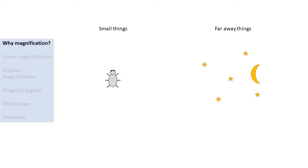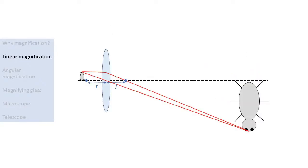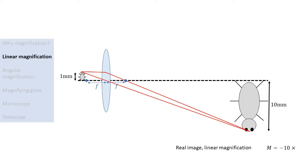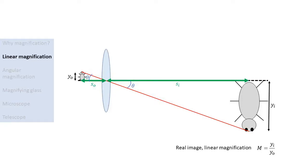The purpose of many optical instruments is to magnify things — either we want to see small things like bugs, or large things like stars which look small because they are so far away. Therefore, it is important to quantify the magnification of optical instruments. Suppose we have a small object of which we create a real image using a single lens, which can be projected on a screen or captured by a camera. If the object is 1 mm large and the image is 10 mm large, then the object is magnified 10 times. The magnification is negative because the image is inverted. Generally, the linear magnification is given by the height of the image divided by the height of the object. In the case of imaging with a single lens, using similar triangles, the magnification is given by the negative of the image distance divided by the object distance.